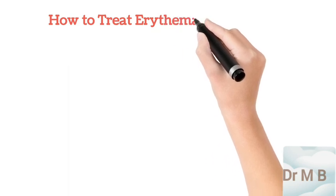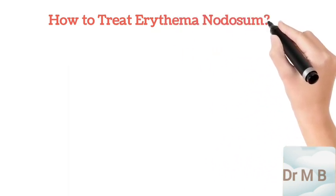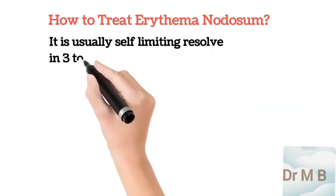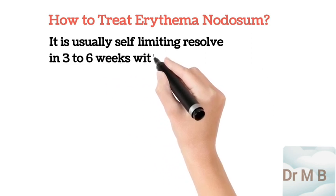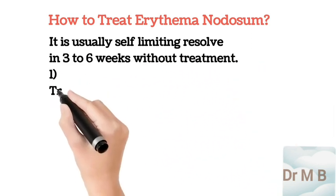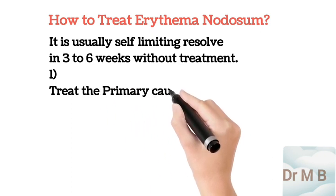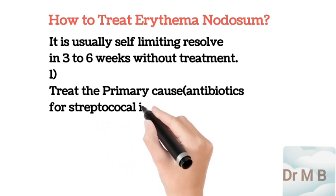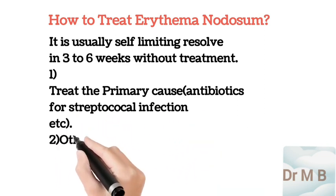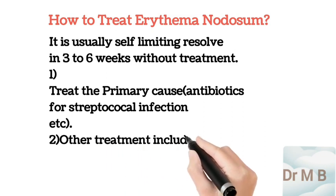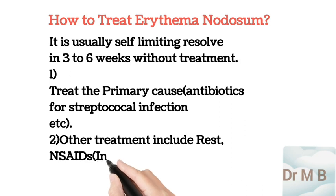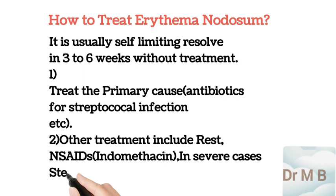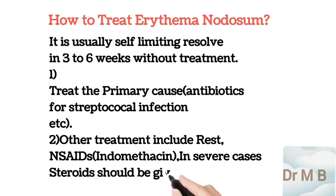Finally, how to treat erythema nodosum? You should know that erythema nodosum is usually self-limiting, resolving in 3 to 6 weeks without treatment. First, look for the known primary cause and treat it — for example, antibiotics for streptococcal infection. Other treatments include rest and NSAIDs like indomethacin. In severe cases, steroids should be given.